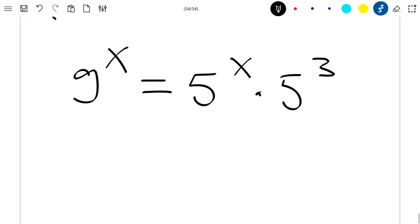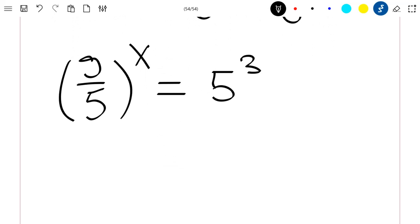We can still rewrite this as 9 divided by 5 to the power x equal to 5 to the power 3. This is again 9 divided by 5 to the power x equal to 125.